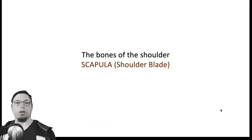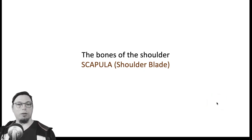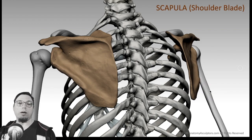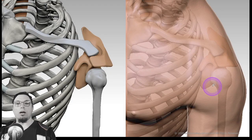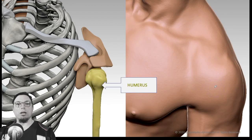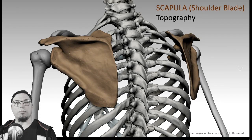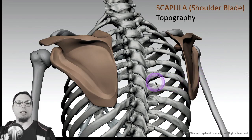Let's start with the bones of the shoulder, and the first bone we will cover is the scapula. The scapula is basically a flat bone located on the back of the shoulder, more like a wing shape. The scapula articulates with the humerus and also with the clavicle. Let's talk about the topography of the scapula now. I've blocked it out so it's easier to understand the form.